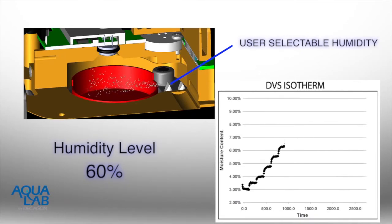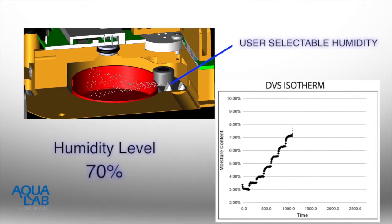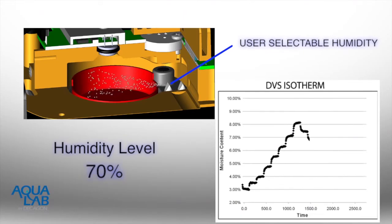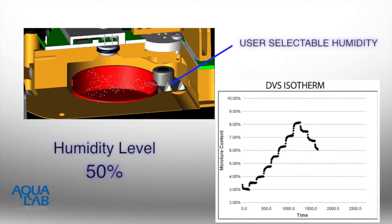At each humidity, the sample must come to equilibrium. DVS isotherms are useful for determining equilibrium moisture contents at a given humidity, maximum moisture sorption for a product, and kinetics of absorption.